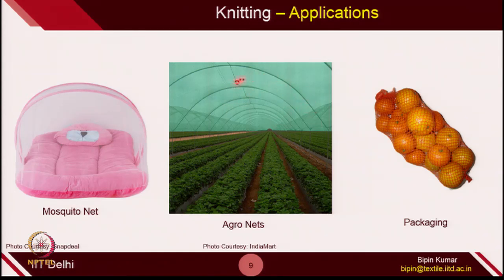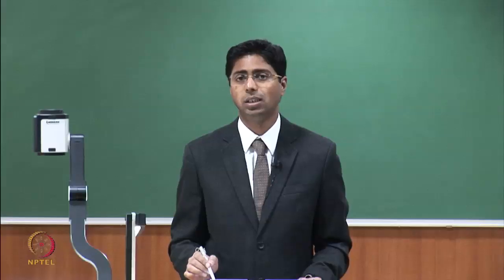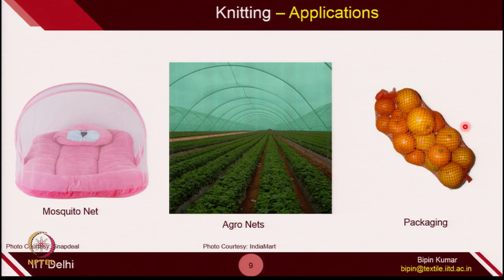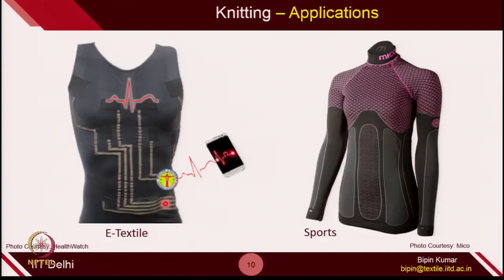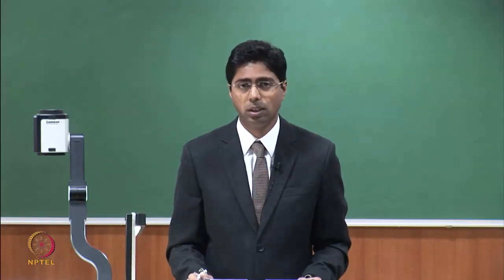Knitted structures allow air and moisture to pass out, but can also protect against excessive sunlight intensity for certain crops — so agro-nets are also very useful. In supermarkets, knit structures are also used as packaging material, where you can keep many materials in these structures. Apart from these common applications, some advanced applications which are nowadays happening around the world include e-textiles — an area where you actually integrate sensors or actuators and make the garment responsive. These garments can be used for health monitoring, which is the top priority in the 21st century.